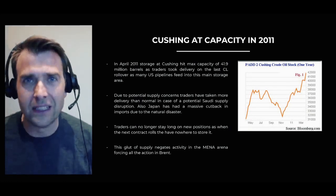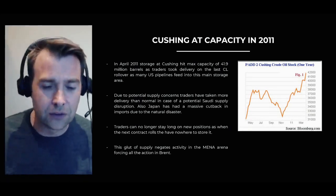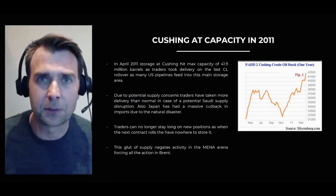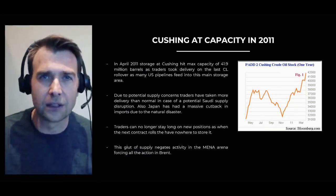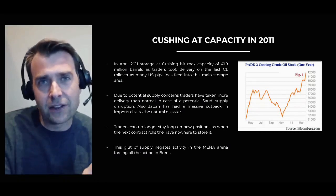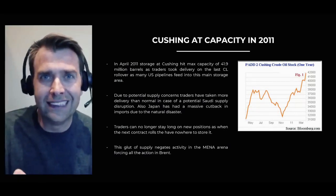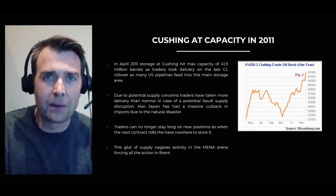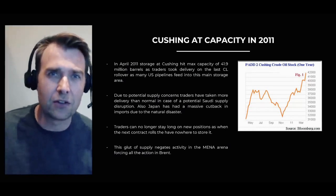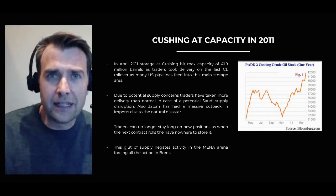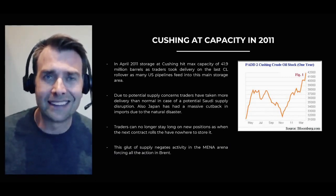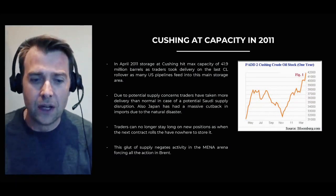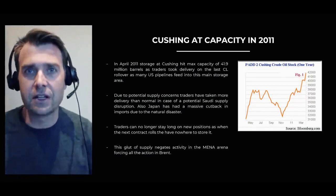The last time that we saw something like this was in 2011 during the Arab Spring. The fruit seller in Tunisia set themselves on fire in protest about the regime. And that spread across northern Africa into Egypt in Tahrir Square when Mubarak got deposed by the military. And then it moved into the Middle East with Bahrain and Amman. What happened during this time in 2011 is a lot of U.S. traders took delivery of oil.